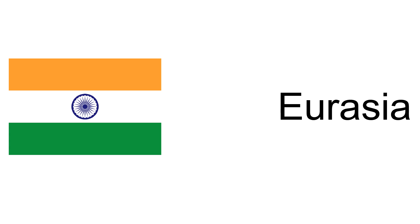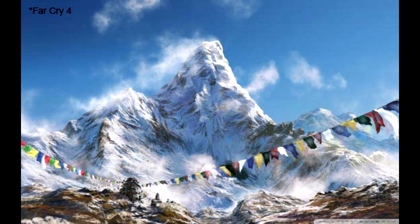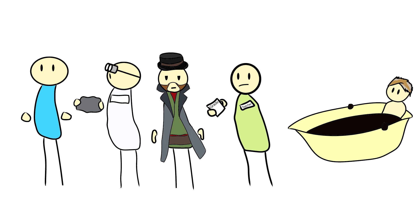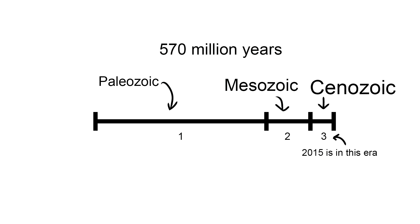After the Mesozoic Era, India collided with Eurasia and created the Himalayas. The era when this happened is called Cenozoic. Cenozoic, meaning new life, is also known as the Age of Mammals. This is also the era that we live in today.